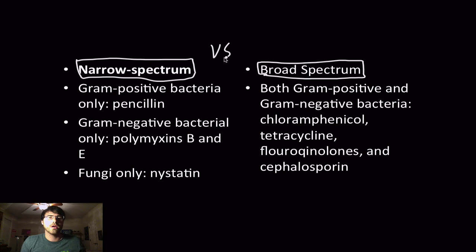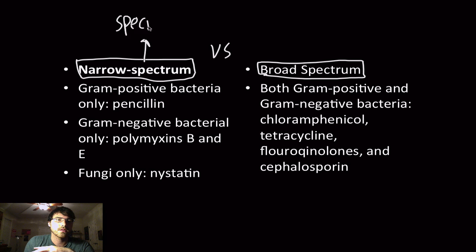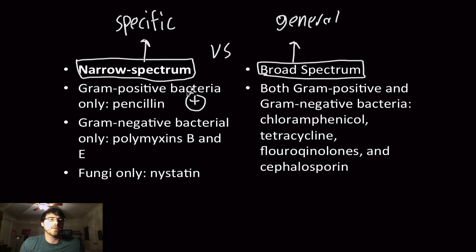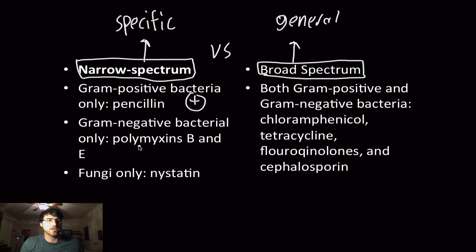Two important terms: narrow spectrum versus broad spectrum. A narrow spectrum antibiotic is very specific. For example, penicillin only inhibits gram-positive bacteria — it inhibits the transpeptidase action of forming that NAG-NAM crosslink on the cell wall. Polymyxins B and E target gram-negative bacteria. Nystatin is specific only for fungi, due to its mechanism of action on the membrane.